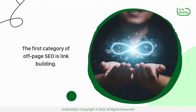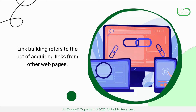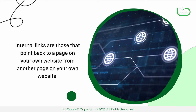The first category of off-page SEO is link building. Link building refers to the act of acquiring links from other web pages. These links can be either internal or external to your site. Internal links are those that point back to a page on your own website from another page on your own website.